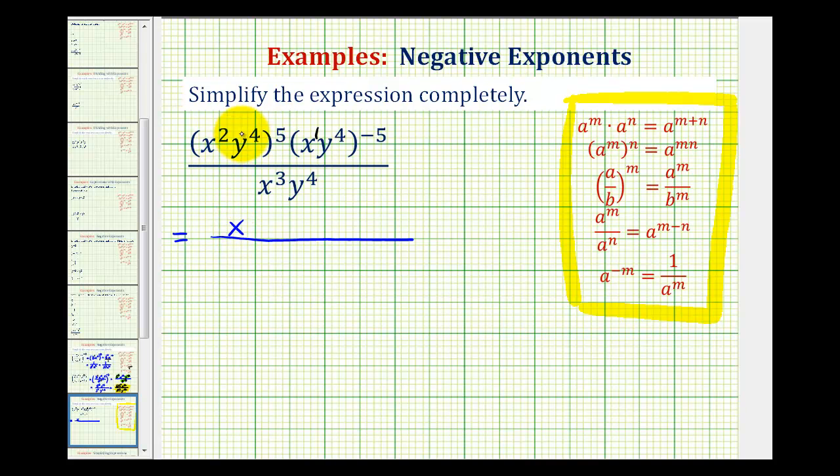So I'll have x to the power of two times five is ten and y to the power of four times five is twenty times, we'll multiply these exponents by negative five. So I'll have x to the power of one times negative five is negative five. And y to the power of four times negative five, which is negative twenty.